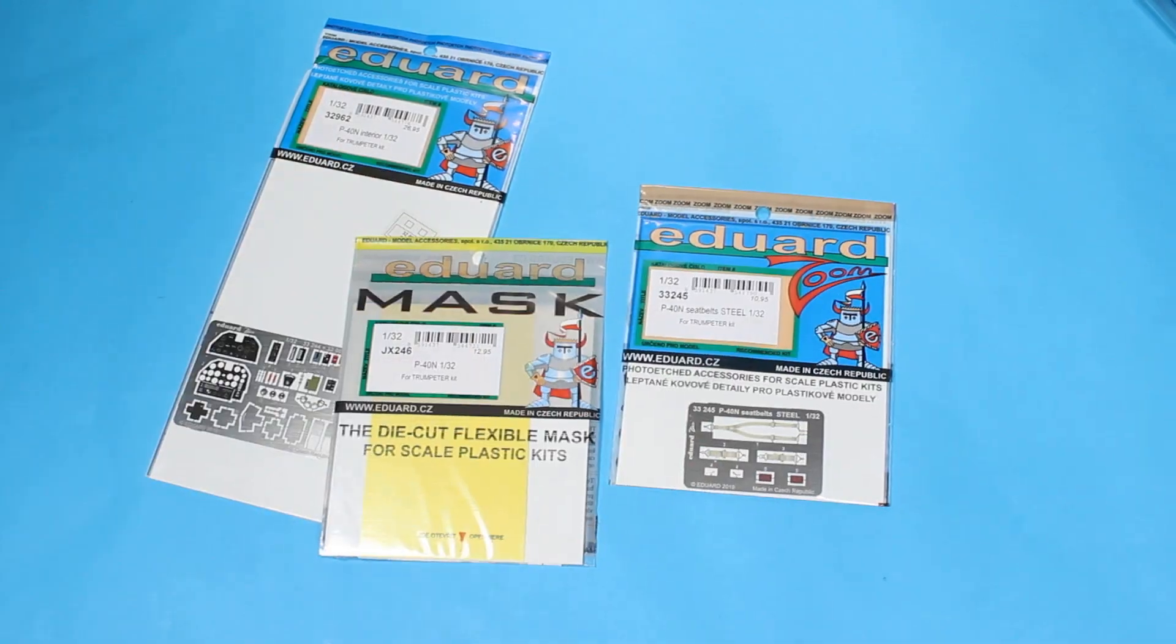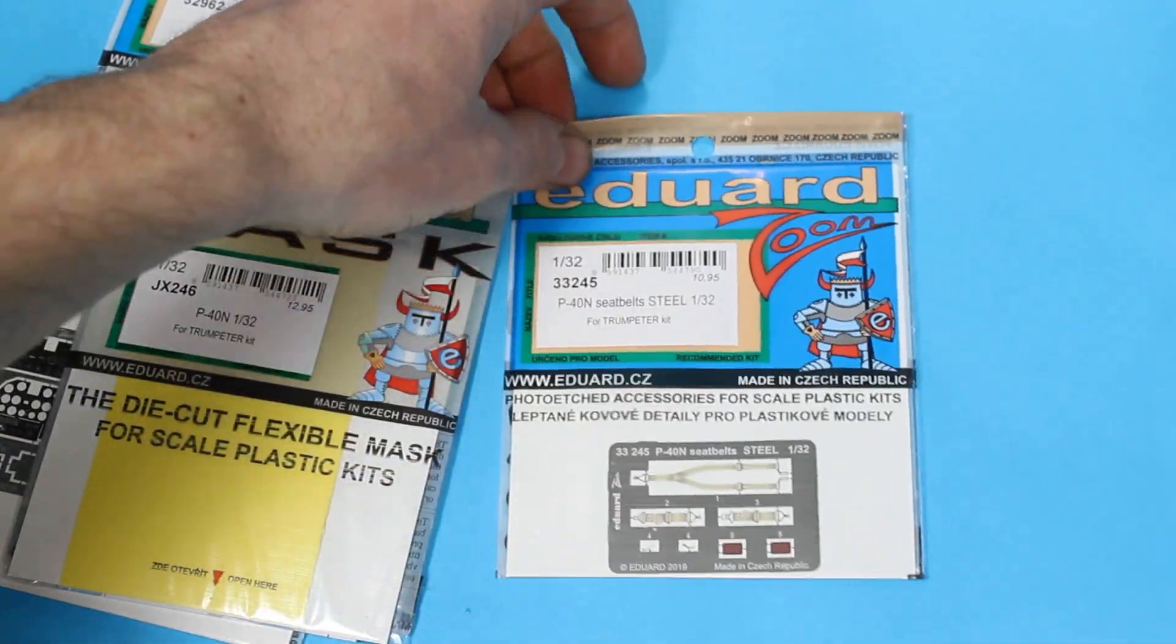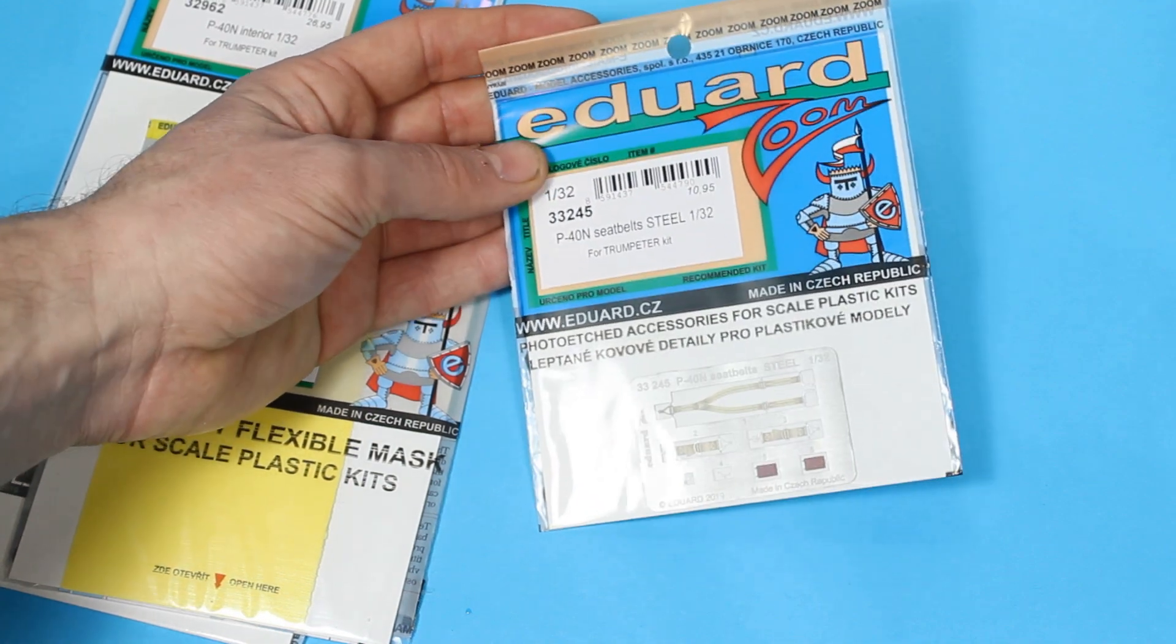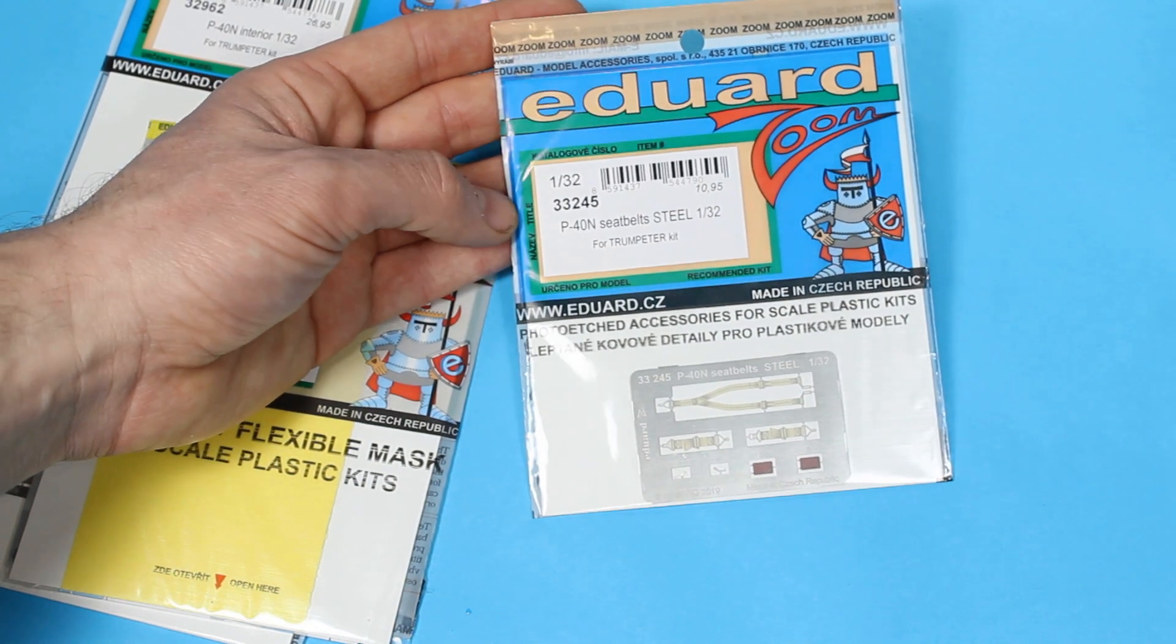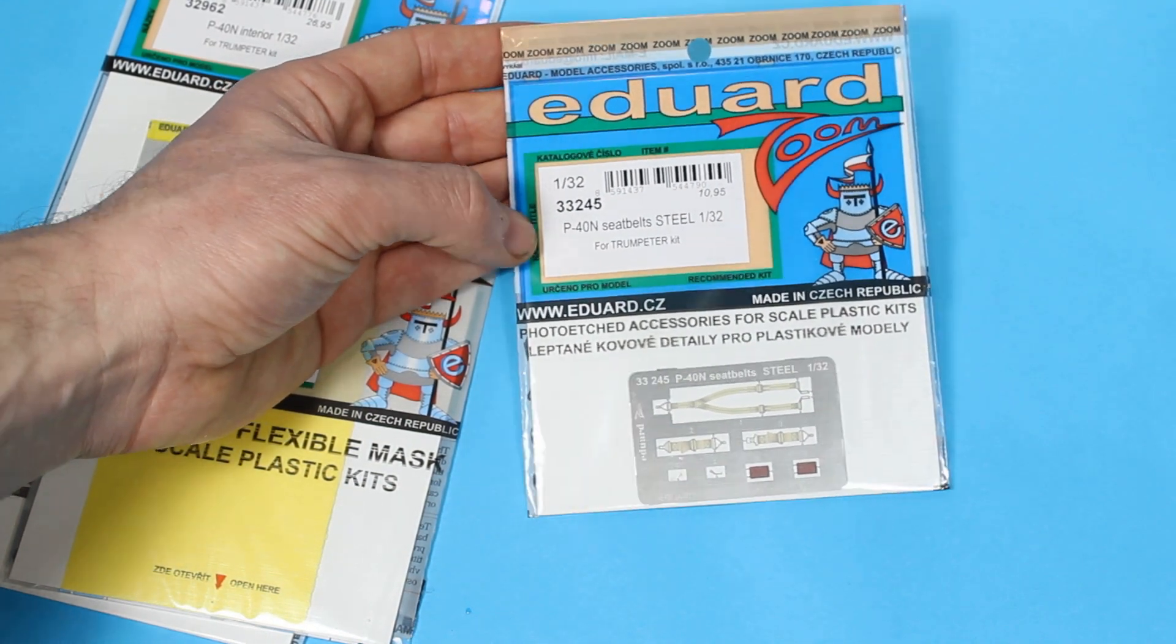So the belts, nothing really special - they're steel belts, pre-painted, a little bit softer than the ones you get in the kit and a little bit more refined. So I thought I'd grab those.